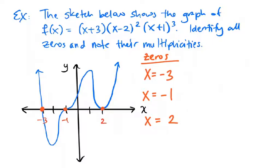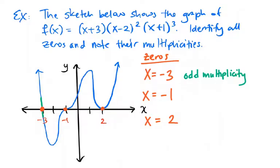Now we need to talk about the multiplicity, and to investigate it let's use both the graph and the equation. At x equals negative three, would you consider the graph to cut or bounce? When it passes through negative three it truly cuts through — it's not bouncing off that point. So that's an odd multiplicity. How about at x equals negative one? It does look a little different than x equals negative three, but it's still definitely passing through, not bouncing. So that would again be an odd multiplicity.